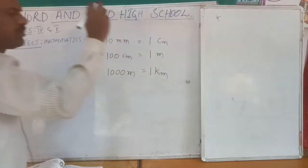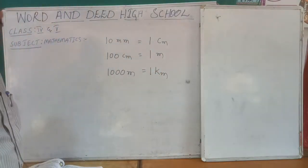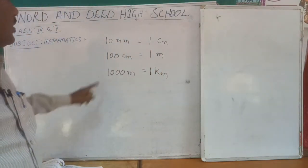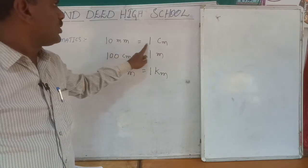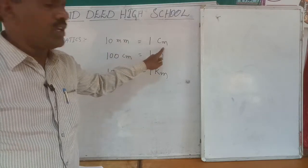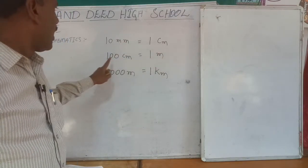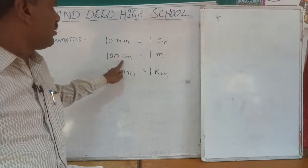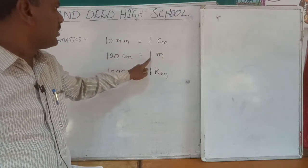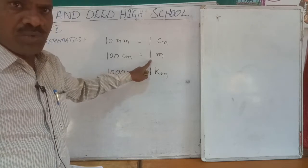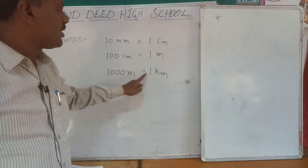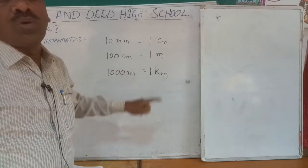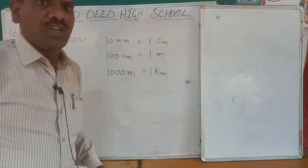This is the measurement of length: 10 millimeters equal to 1 centimeter, 100 centimeters equal to 1 meter, 1000 meters equal to 1 kilometer.